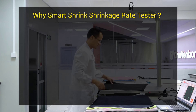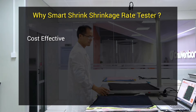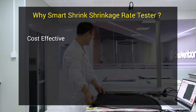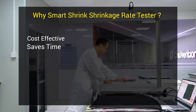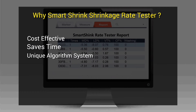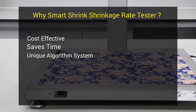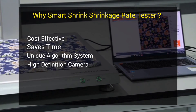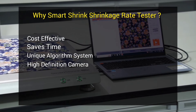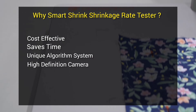Now let's discuss some features of the Smart Shrink Shrinkage Rate Tester. First, it is cost effective — you can save up to $30,000 per year and also save labor costs. Second, it saves time — fabric shrinkage testing can be done within 5 seconds. Third, it uses a unique algorithm system to calculate shrinkage rate and provide accurate results. Fourth, it features a high-definition camera that photographs the test sample and automatically measures the distance between the dots for further testing.